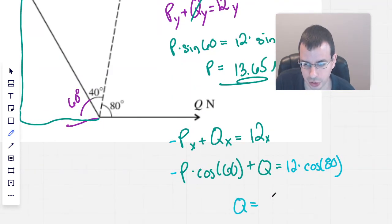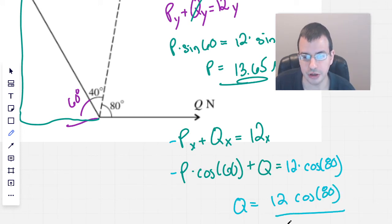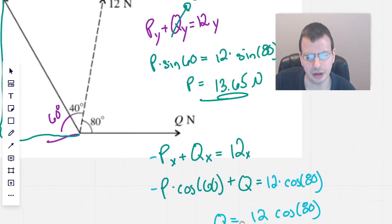So Q equals 12 cosine of 80 over... is that right? Seems right, okay.